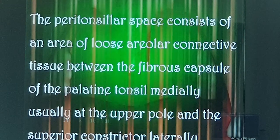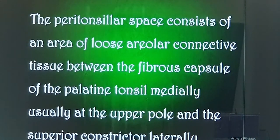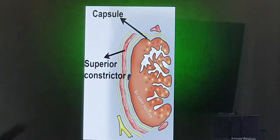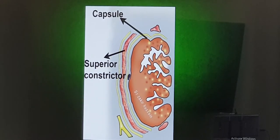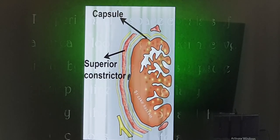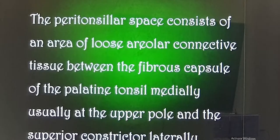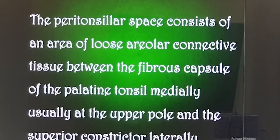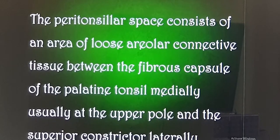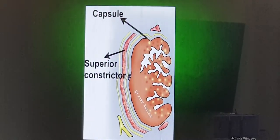Let me show you the structure. This is the capsule and this is the muscle. There will be abscess formation between the capsule of the palatine tonsil and the muscle which is seen laterally, and usually it is seen in the upper part of the tonsil.